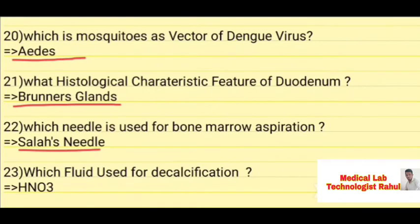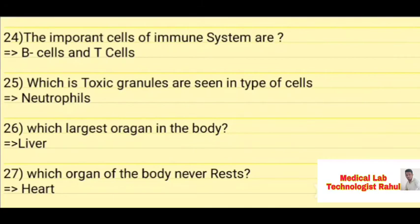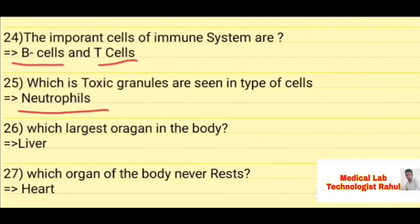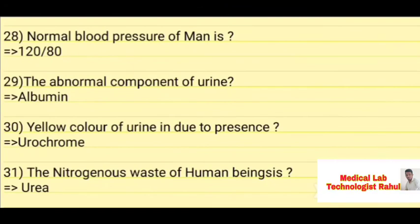Sallis needle is used for bone marrow aspiration. HNO3 is used for decalcification. The important cells of the immune system are B cells and T cells. Toxic granules are seen in neutrophils. The largest organ in the body is the liver.